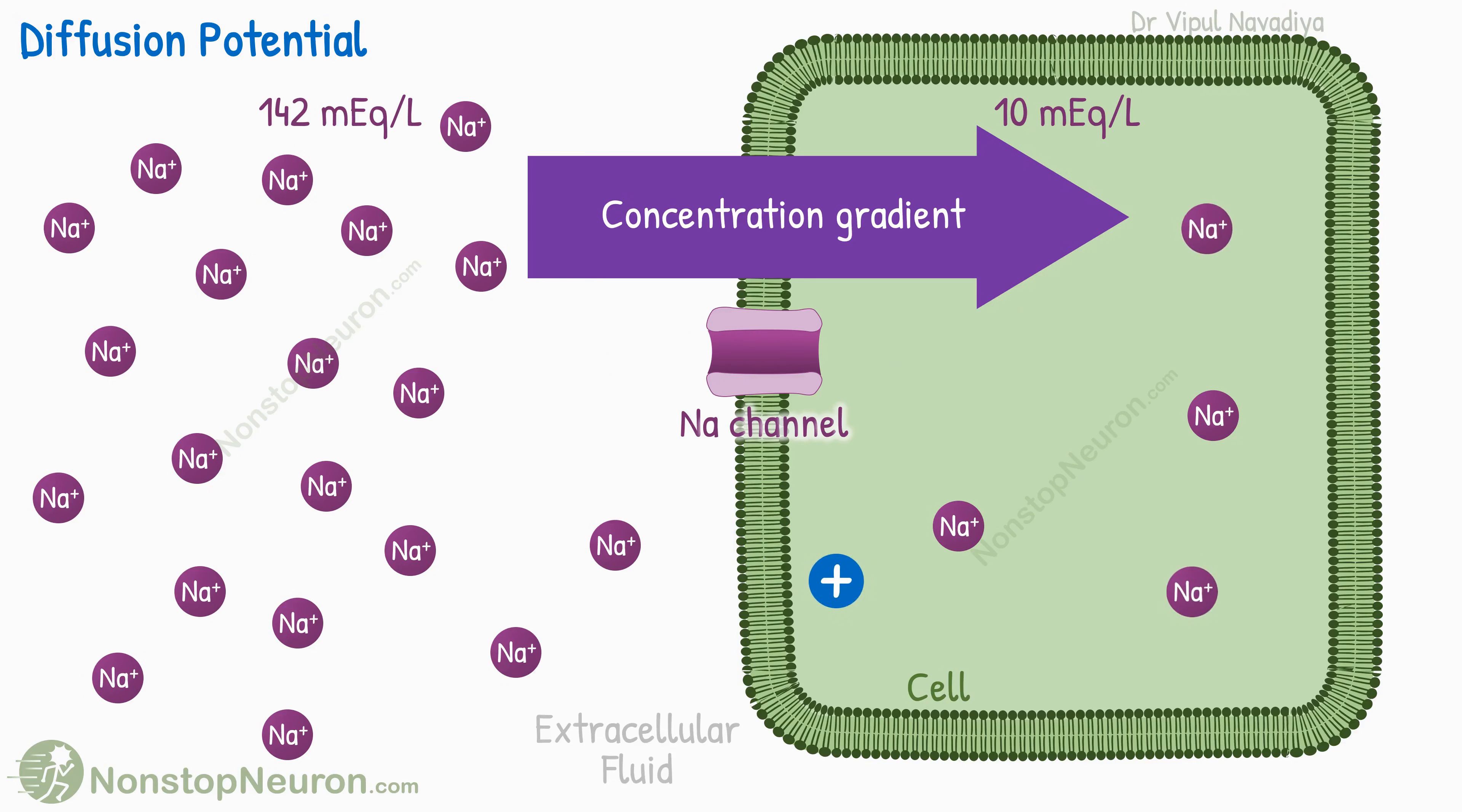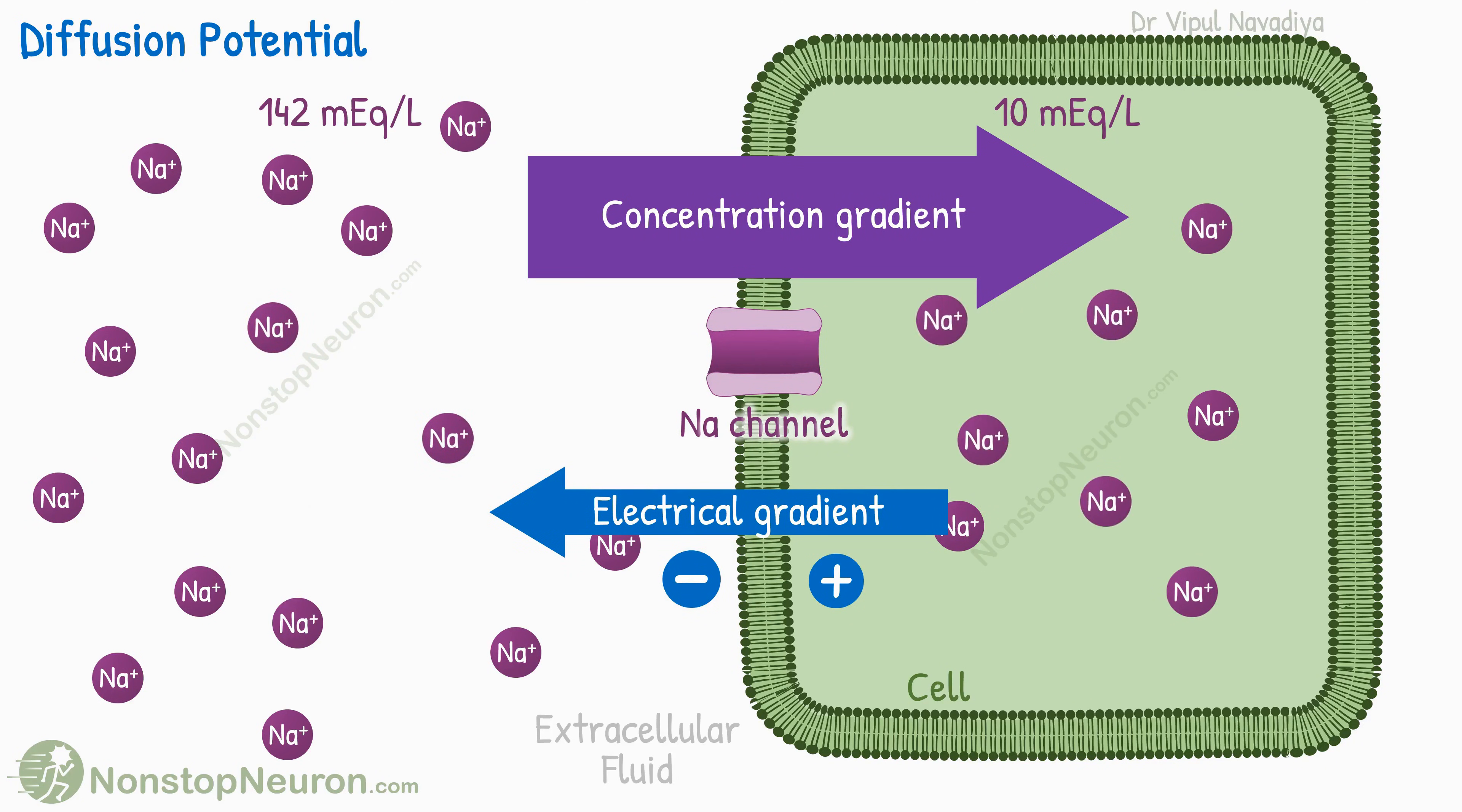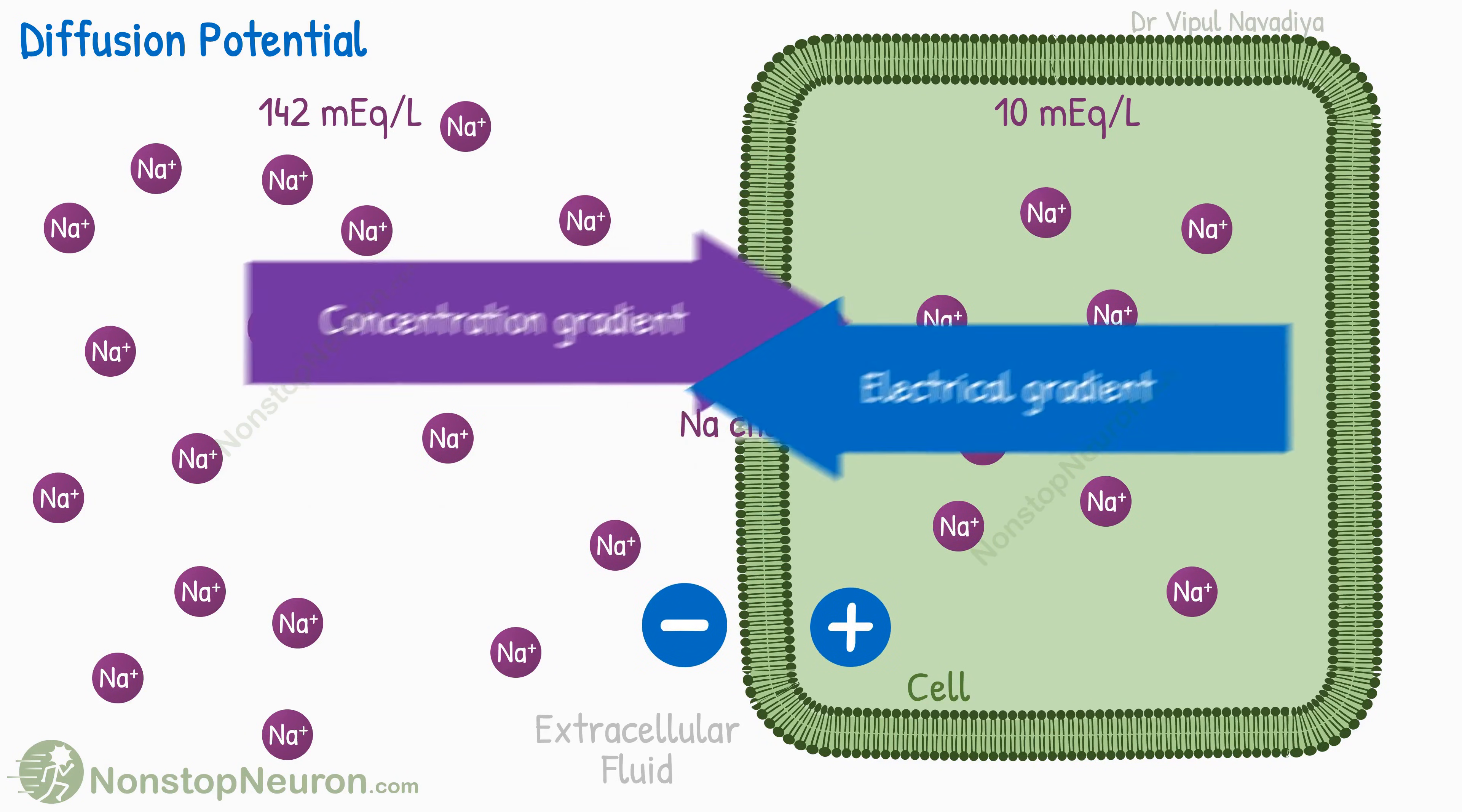This makes the inside of the cell electropositive, and outside, electronegative. This potential opposes sodium entry into the cell. And with more and more diffusion of sodium, it becomes strong enough to stop the flow of sodium.